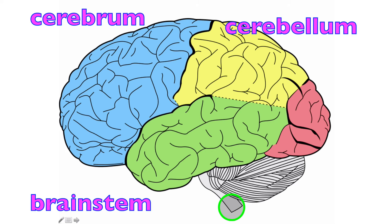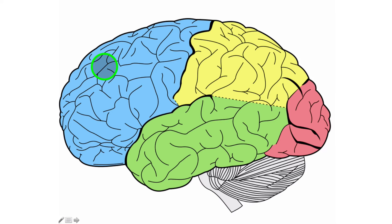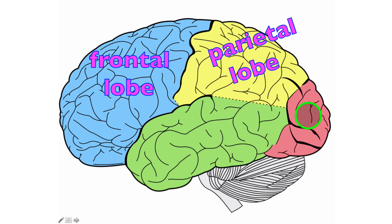So if we were going to divide up the cerebral hemispheres, we would have five lobes. Here we can see four lobes: in blue, the frontal lobe; in yellow, the parietal lobe; pink right here is the occipital lobe; and in green is the temporal lobe.